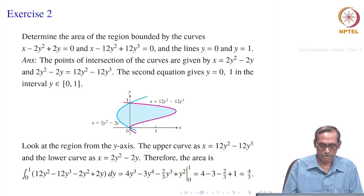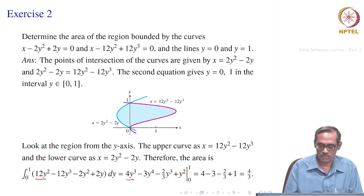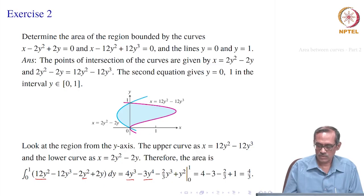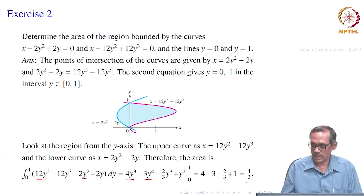That gives the integrand 12y² - 12y³ - 2y² + 2y = 10y² - 12y³ + 2y. Integrating: 12y² integrates to 4y³, 12y³ integrates to 3y⁴, 2y² integrates to (2/3)y³, and 2y integrates to y². Evaluating at 0 and 1 gives the answer as 4/3.